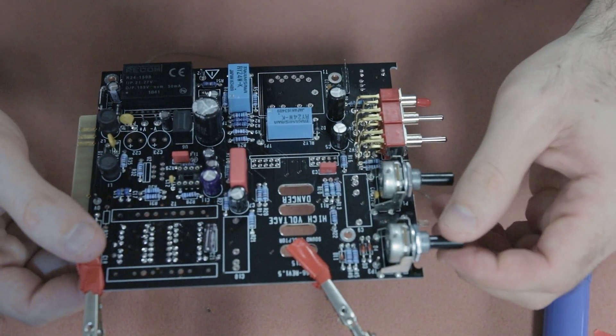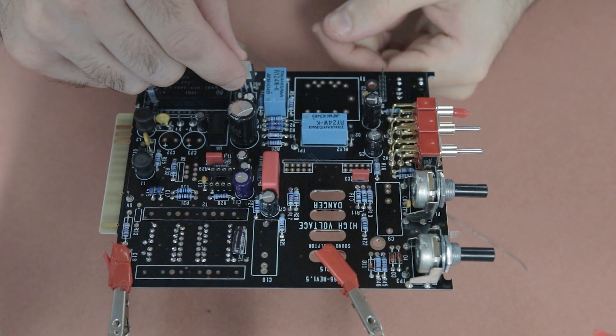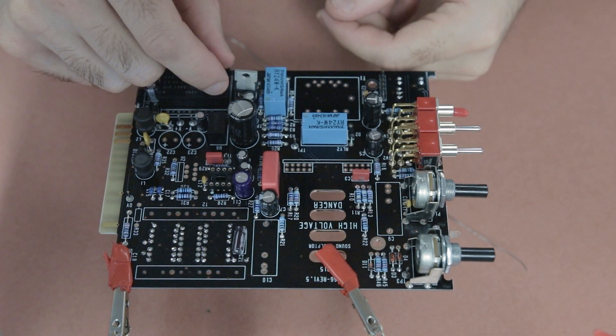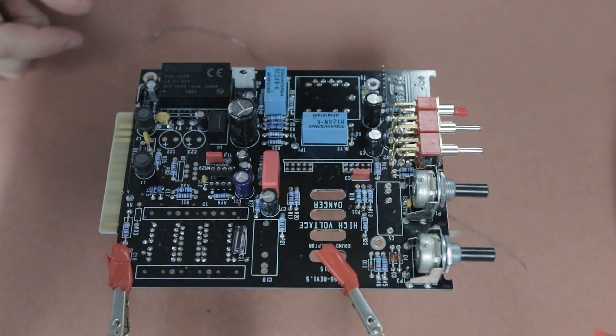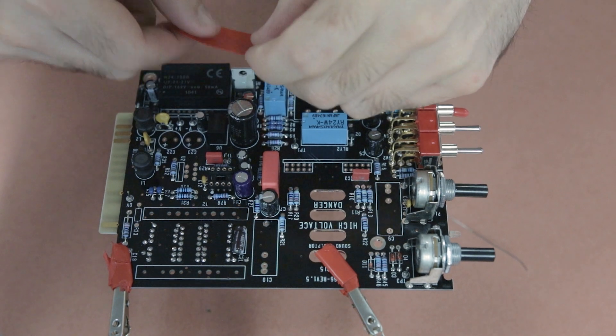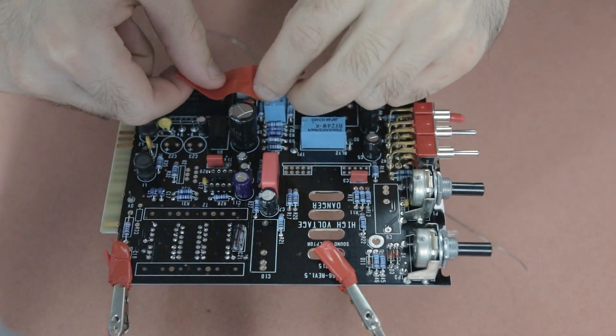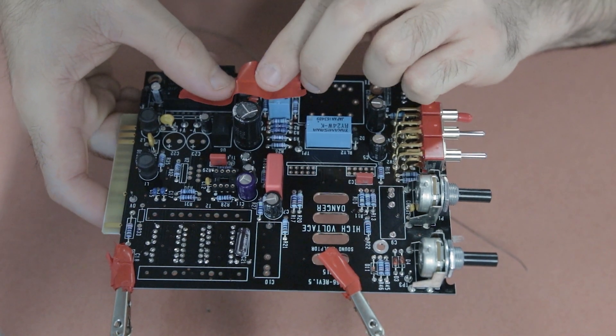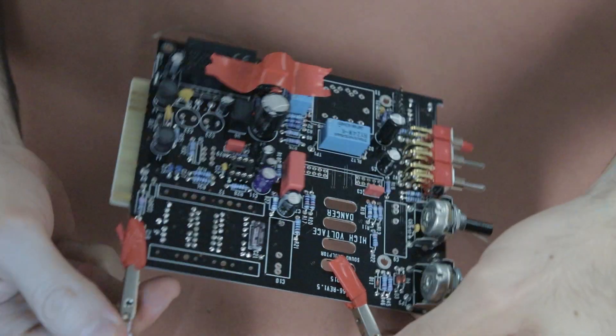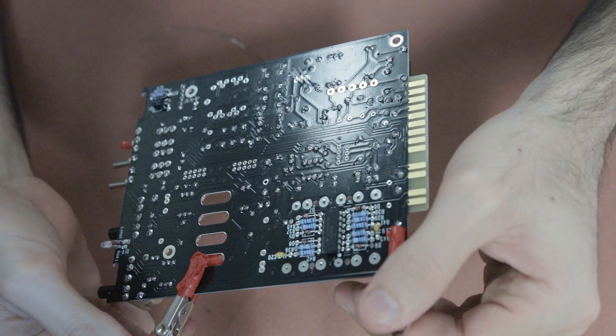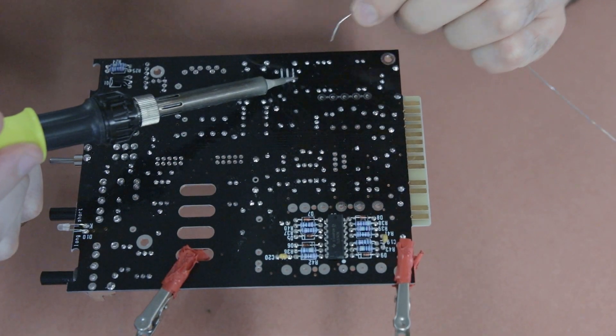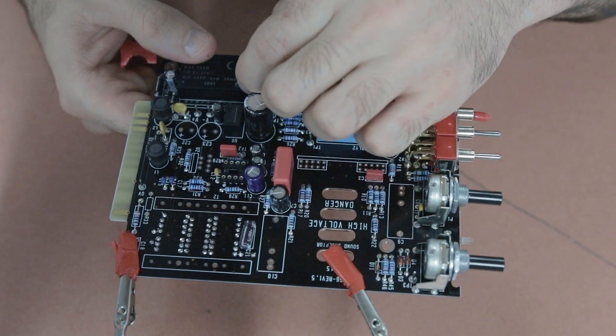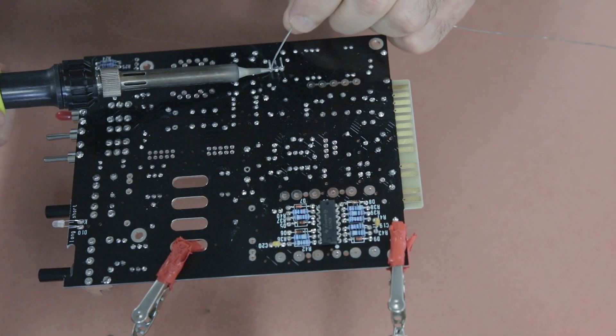And the next component to go in is this variable voltage regulator and it's kind of similar to some of the like op-amp components and stuff like that that have and transistors that have three legs and it was a bit tricky to keep still on the board so I just used some tape once again flip the board solder the leg check the orientation and then soldered the remaining legs.